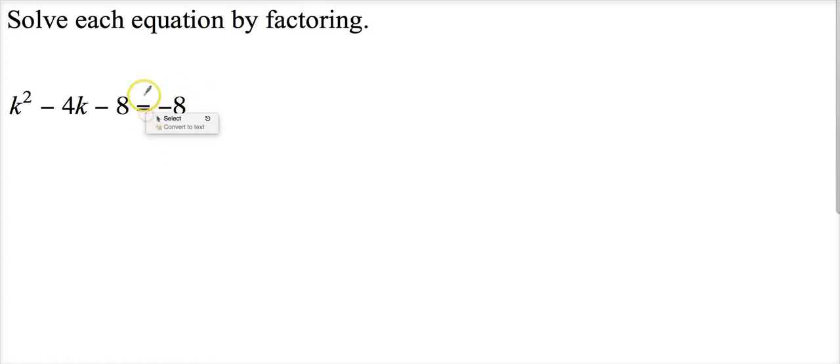So for instance, in this one, I need to get rid of this negative 8, so I'm going to say okay, plus 8, because that's how you get rid of negative 8 - you're at negative 8 and you move 8 up. So those cancel out, this goes away, this goes away, and it ends up with k squared minus 4k equals zero.